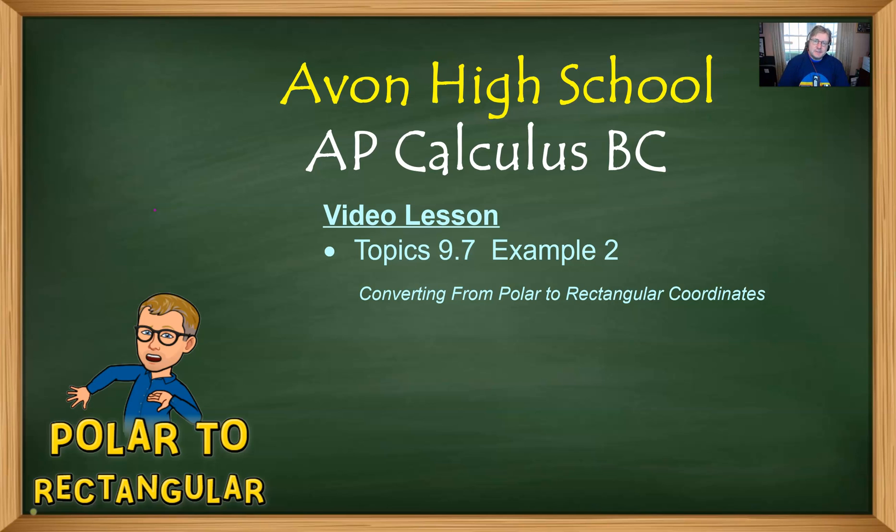Greetings AP Calculus BC students, Mr. Record here from Avon High School, and we are going to dive right into example two that covers 9.7. We're going to talk about converting polar to rectangular coordinates.